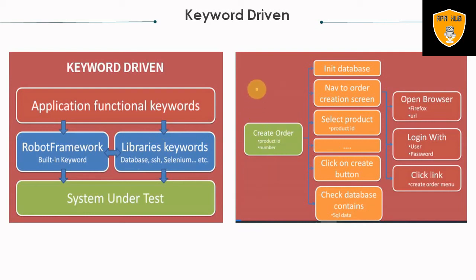Here is a practical example: placing an order from an e-commerce site. You select the product ID, check the database to see if the order is available, navigate to the order screen, select the product ID, click the Create button, and check the database for SQL data. Basically, it opens the browser, logs in with username and password, and follows all steps until the order is placed. This illustrates the complete automation flow in Robot Framework.